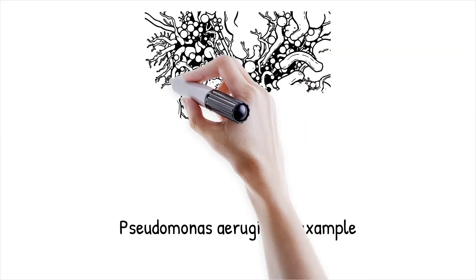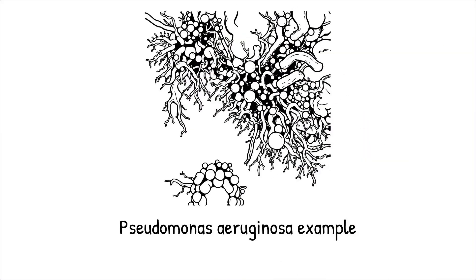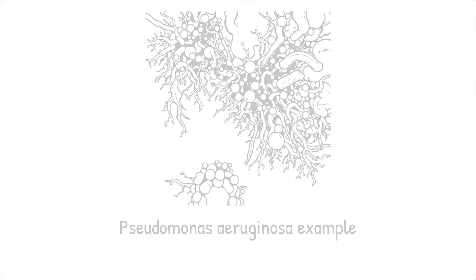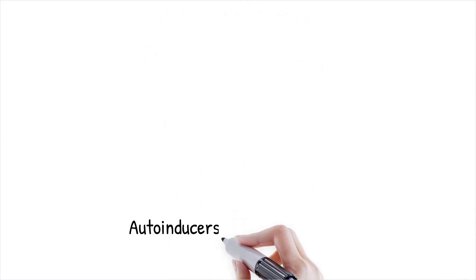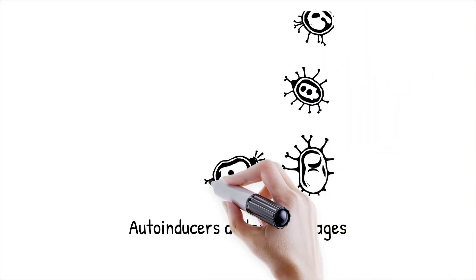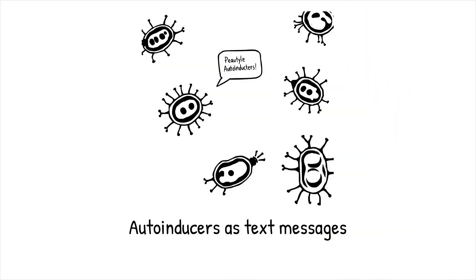In Pseudomonas aeruginosa, quorum sensing controls the production of virulence factors and biofilm formation, enabling the bacteria to establish infections more effectively. Auto-inducers are like text messages sent among bacteria. When enough messages are exchanged, the group decides to act. This coordinated response leads to behaviors that benefit the entire bacterial community.